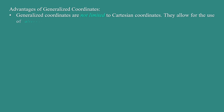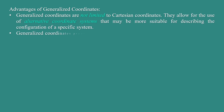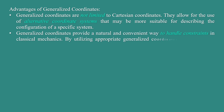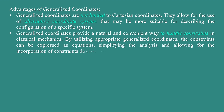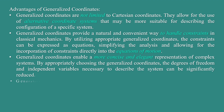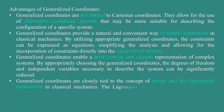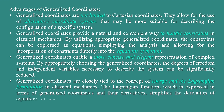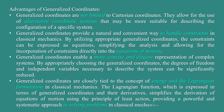Advantages of generalized coordinates. Generalized coordinates are not limited to Cartesian coordinates; they allow for the use of alternative coordinate systems that may be more suitable for describing the configuration of a system. Generalized coordinates provide a natural and convenient way to handle constraints in classical mechanics. By utilizing appropriate generalized coordinates, the constraints can be expressed as equations, simplifying the analysis and allowing for the incorporation of constraints directly into the equations of motion. Generalized coordinates enable a more concise and elegant representation of complex systems. By appropriately choosing the generalized coordinates, the degrees of freedom and independent variables necessary to describe the system can be significantly reduced.